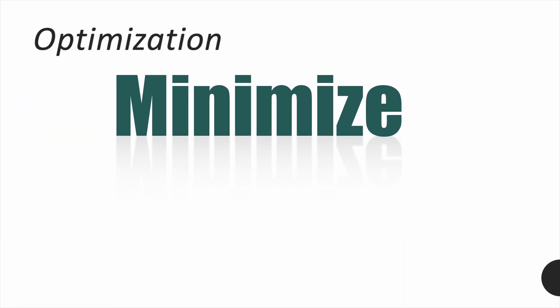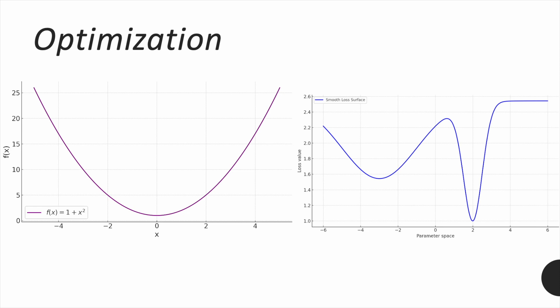In optimization, the goal is usually to either minimize or maximize a function. For example, if we're trying to minimize a function f, the optimizer will test different values of x to find the one that gives the lowest value of the function. But sometimes, the function we're minimizing is not a smooth, single-valley curve. Instead, it might have multiple dips or valleys. That's where the concepts of local and global minima come in.